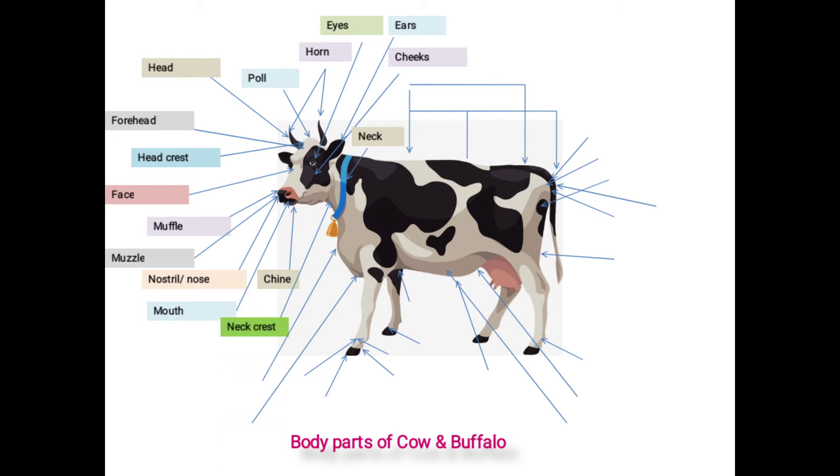It is lying between center of poll to hump. This line is supported with heavy muscular growth. Next one is dewlap. It is the fold of loose skin hanging below neck and in between chin and brisket.